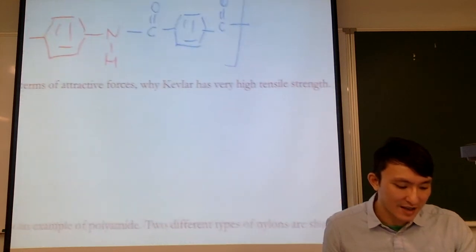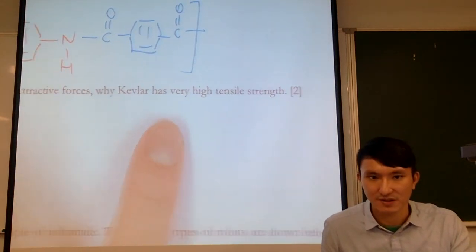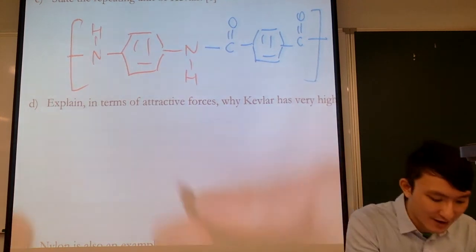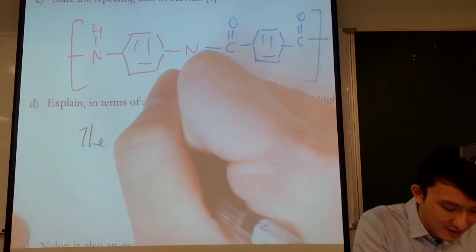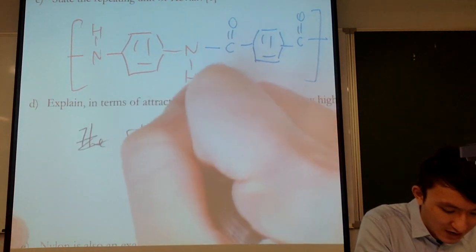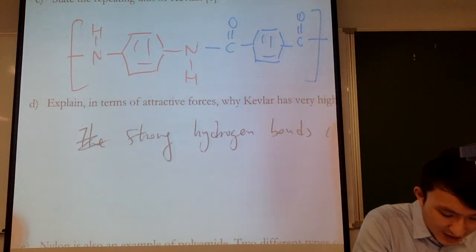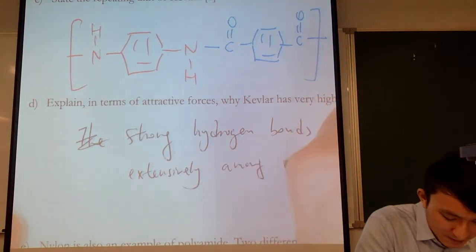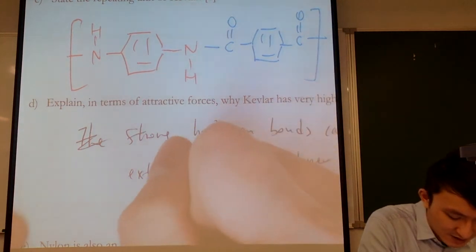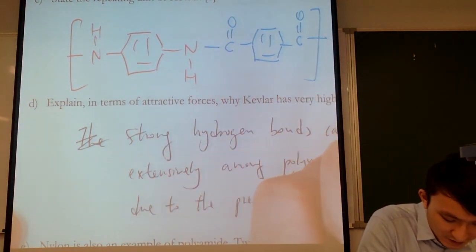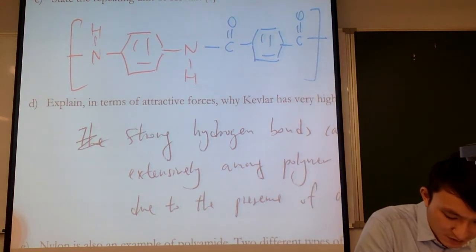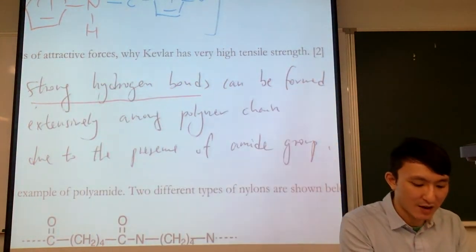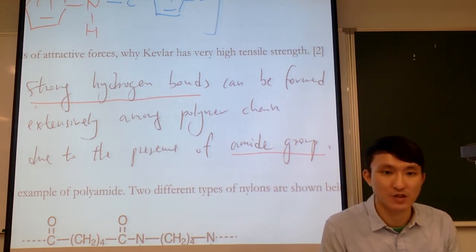Explain in terms of attractive forces why Kevlar has very high tensile strength. Strong hydrogen bonds can be formed extensively among polymer chains due to the presence of amide groups. The key points are: mention the type of force (hydrogen bond), and identify the functional group responsible — the amide group — for forming such strong hydrogen bonds.